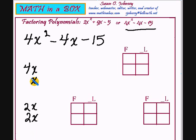I'm going to work with the 4x times x. So underneath the F in my box, I'll write 4x times x. The first term is going to be found by multiplying 4x times x, which is 4x².